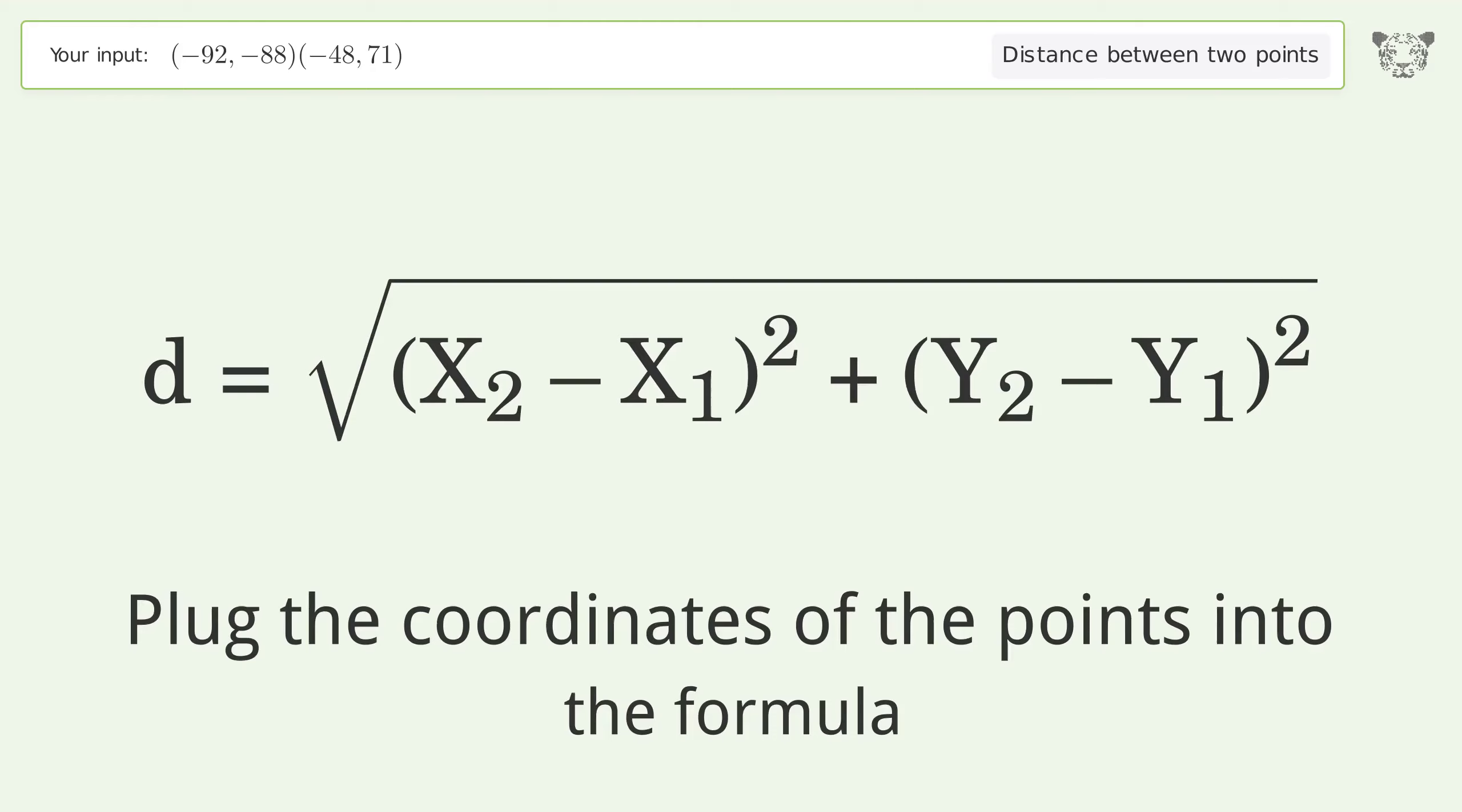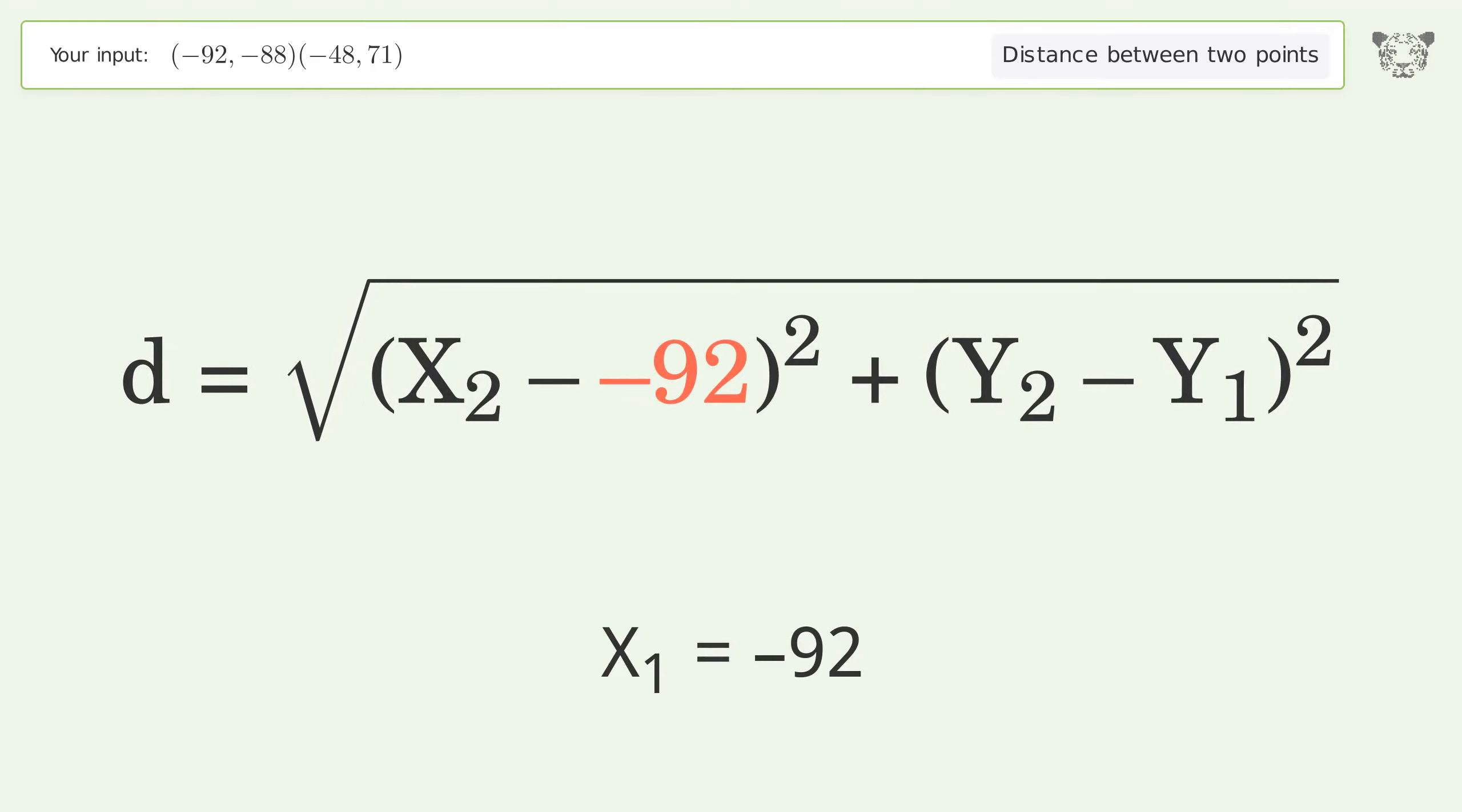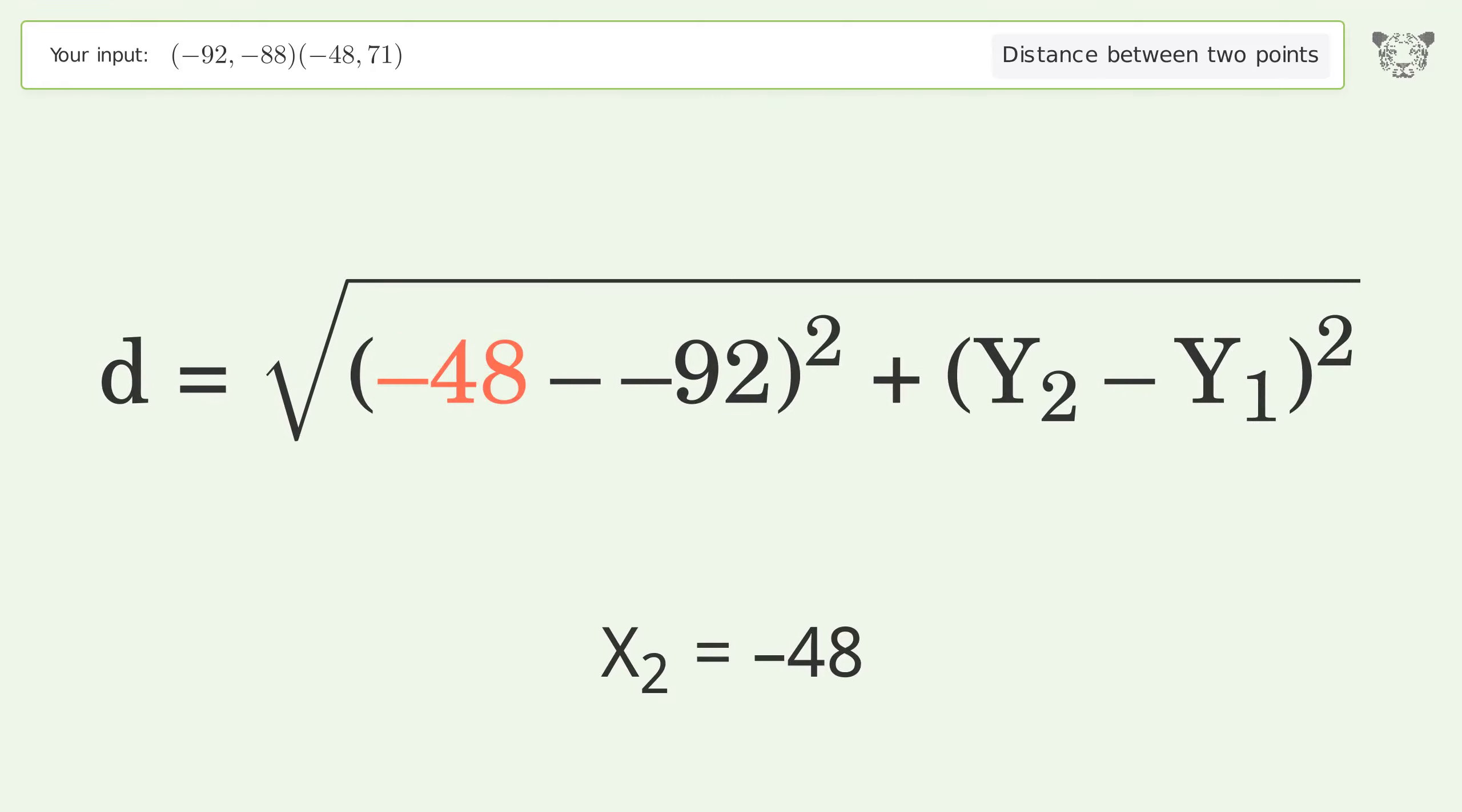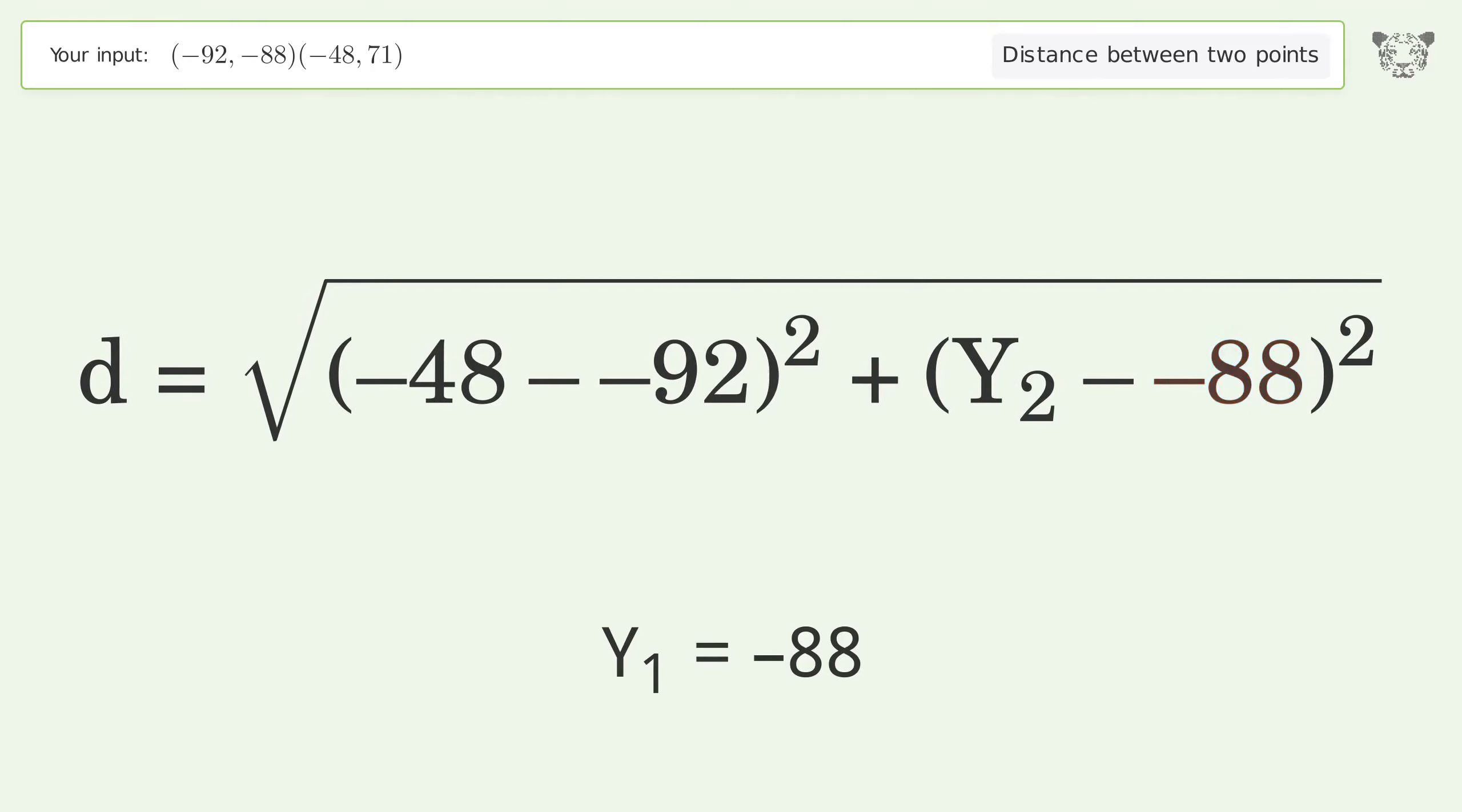Plug the coordinates of the points into the formula. x1 equals negative 92, x2 equals negative 48, y1 equals negative 88, y2 equals 71.